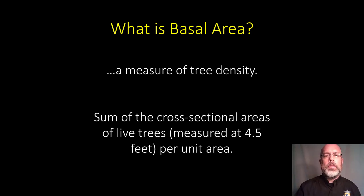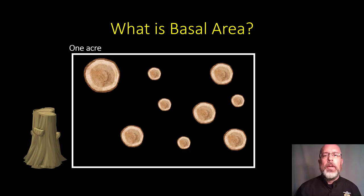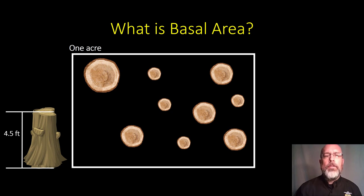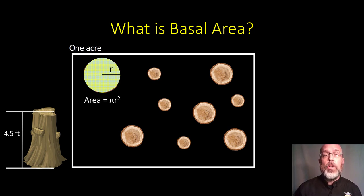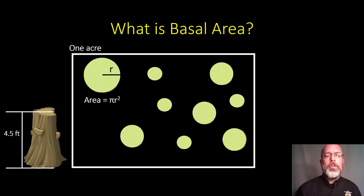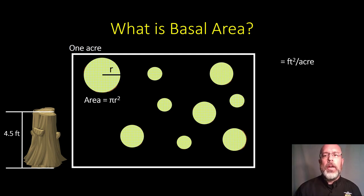Let's look at that in a graphical sense. Imagine this plot here is one acre, and distributed amongst that one acre are a series of trees of different sizes. Now imagine that all of these trees have been cut at four and a half feet above the ground, so all we're seeing are the stumps. This is how we would get basal area: we would take the area of that stump — the area of a circle, pi r squared — and do that for all of the trees in that one acre area, then add all those areas together to get square feet of basal area per acre.